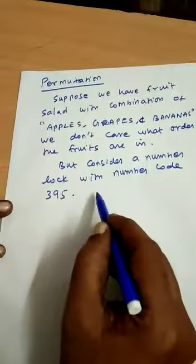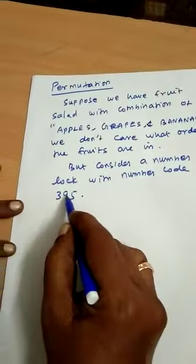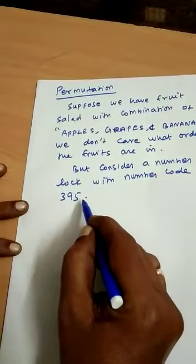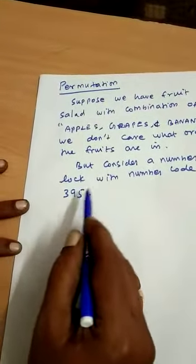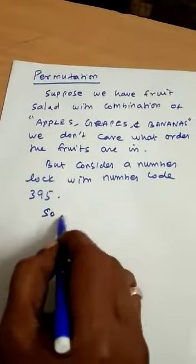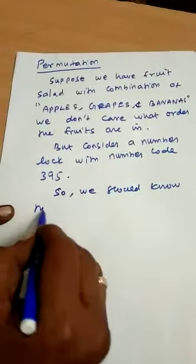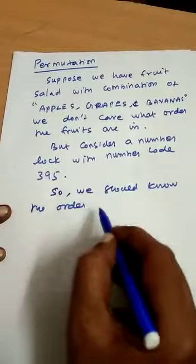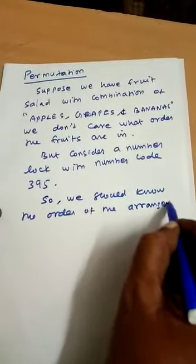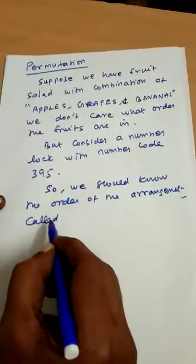But consider a number lock with number code 395. If we change the number to 935 or 593, we cannot open the lock. That is, only 395 opens the lock. We should know the order of the arrangement. It is called permutation.